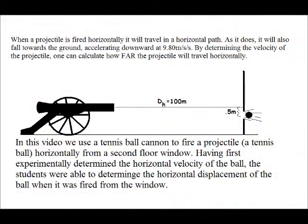When a projectile is fired horizontally, it will travel in a horizontal path. As it does, it will also fall towards the ground, accelerating downward at 9.8 meters per second squared. By determining the velocity of the projectile, one can calculate how far the projectile will travel horizontally.